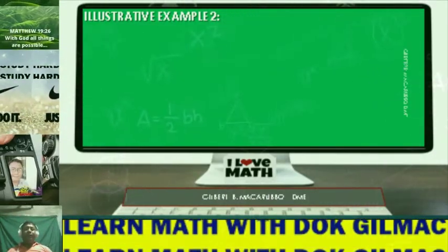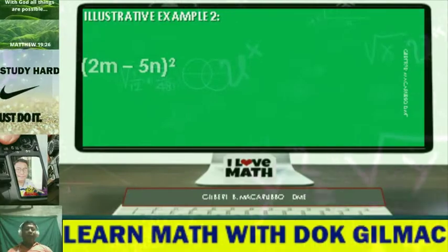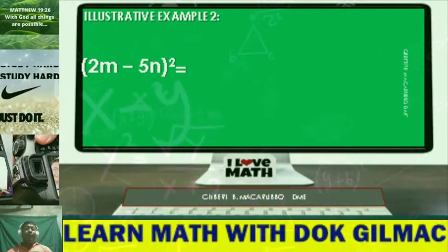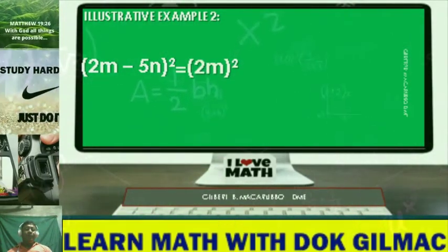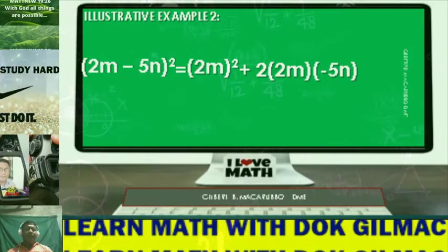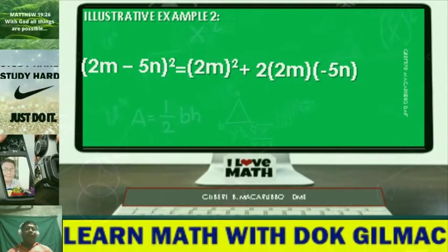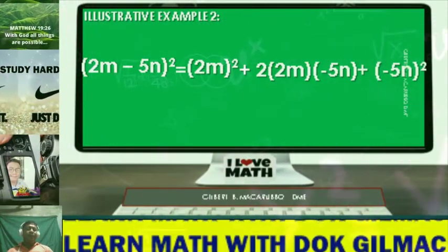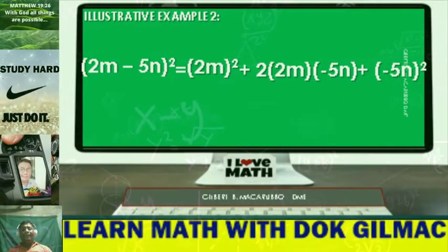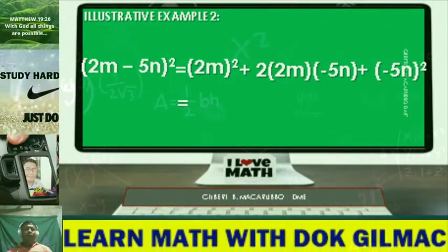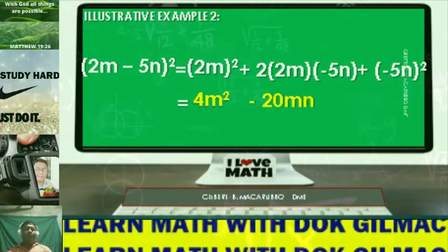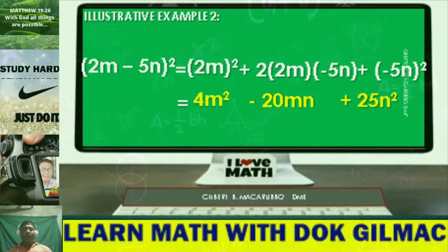Consider illustrative example number 2. 2m minus 5n raised to 2. This is just equal to the square of the first term which is 2m plus twice the product of the first term and second term which is 2m and negative 5n plus the square of the second term which is negative 5n. Simplifying further, this is just equal to 4m squared minus 20mn plus 25n squared.